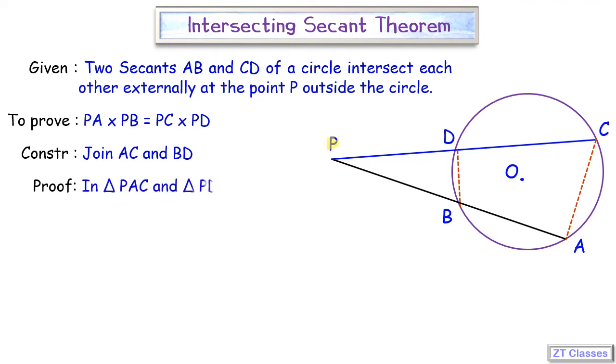In these two triangles, angle P is common. Additionally we have got angle PAC. Now if you'll see, you know that as we have got AB and DC, this is the cyclic quadrilateral, and in cyclic quadrilateral the exterior angle is...